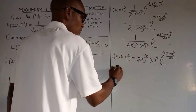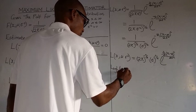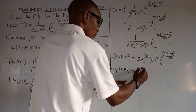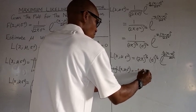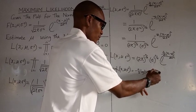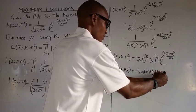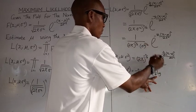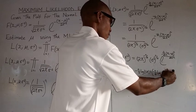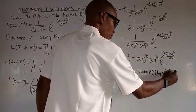We now take the log of the likelihood function. If we take the log, we take the log of the 2 pi term raised to n all over 2, which gives minus n over 2 times log of 2 pi. Then taking the log of the exponential term, we get plus the exponent directly.